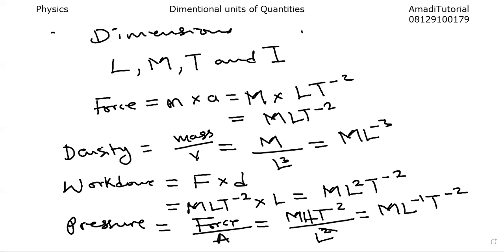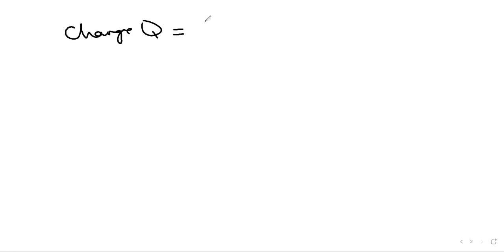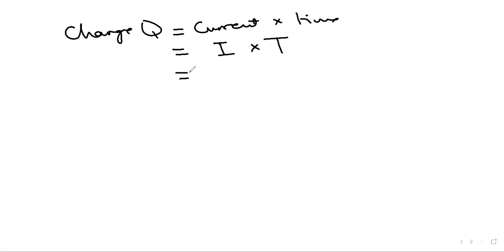The way questions usually come, they might ask for the dimensional unit for any quantity. All you have to do is know the definition or formula, then extract the fundamental quantities. Before we conclude — we have not done the one that includes current. What's the dimensional unit for charge? Charge Q — the definition of charge is current times time. Current is a fundamental unit represented by capital I, and time by T. So the dimensional unit for charge is simply I times T.